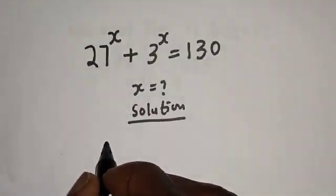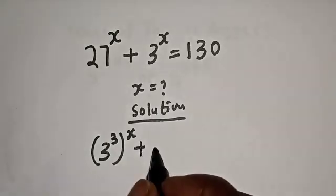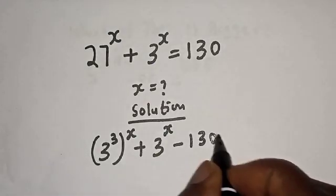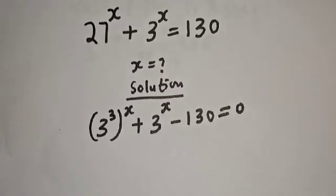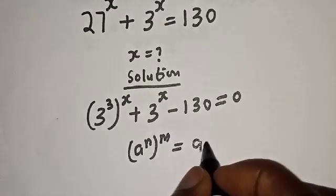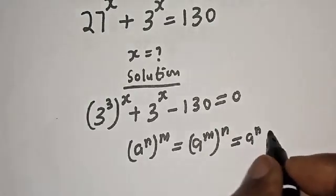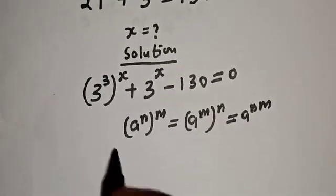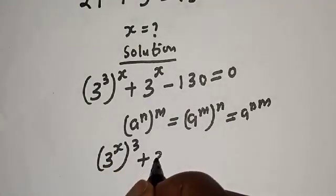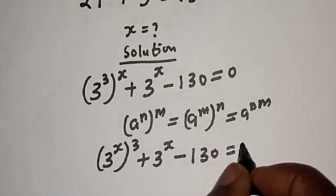27 raised to power s can be written as 3 raised to power 3, raised to power s, plus 3 raised to power s, then minus 130 is equal to zero. Take note of this rule: a raised to power n raised to power m is equal to a raised to power m raised to power n, which is equal to a raised to power nm. So this becomes 3 raised to power s, raised to power 3, plus 3 raised to power s, minus 130 is equal to zero.